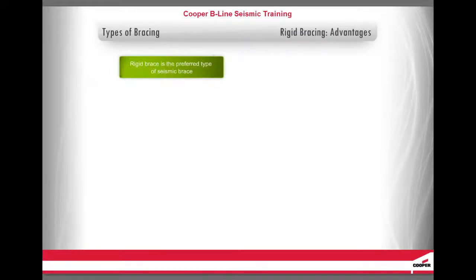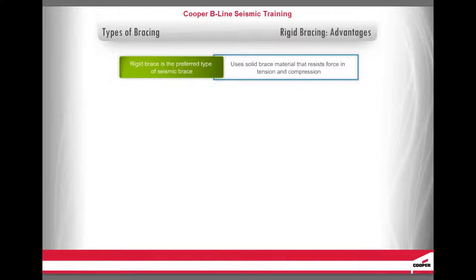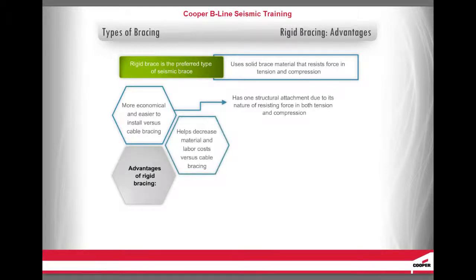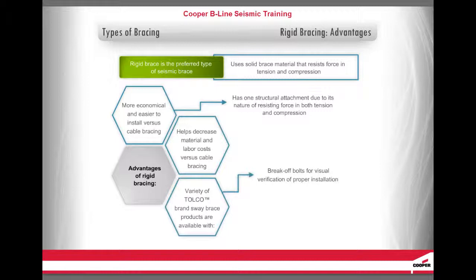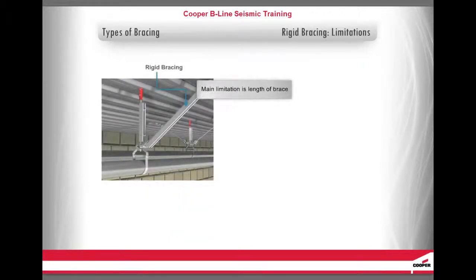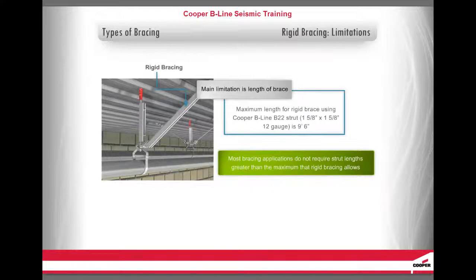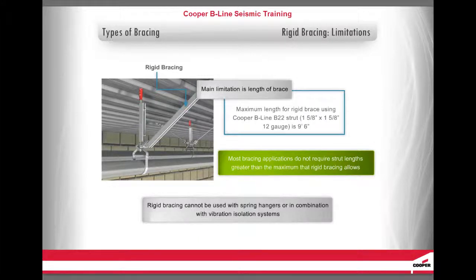A rigid brace is the preferred type of seismic brace. It uses solid brace material that resists force in tension and compression. The advantages include being more economical and easier to install versus cable bracing, requiring only one structural attachment. A variety of Tolco brand sway brace products are available with break-off bolts for visual verification of proper installation torque. The maximum length for a rigid brace using Cooper B-Line B22 strut is 9 feet 6 inches, which covers 95% of bracing applications. Rigid bracing cannot be used in combination with vibration isolation systems.